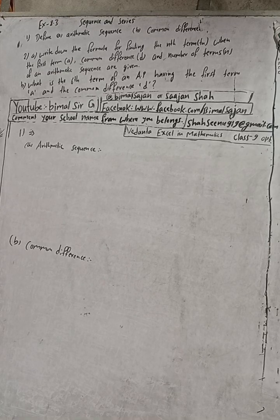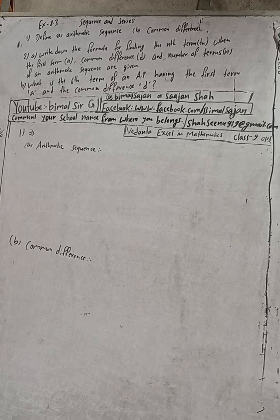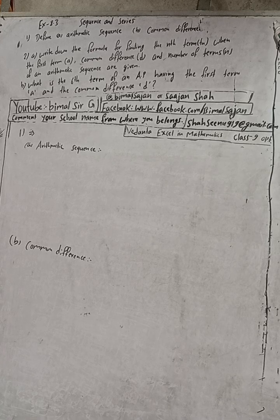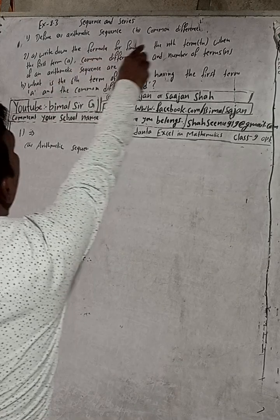Hi Class 9 and 10 students, welcome back to Vimal Sarji's YouTube channel. This is question number one, Exercise 8.3, Sequence and Series, Class 9 Vedant Excellent Mathematics. Don't forget to check the playlist — you will get a lot of solutions there. The question is: define (A) arithmetic sequence and (B) common difference.